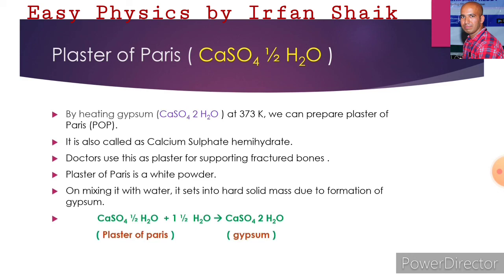When plaster of Paris — CaSO4·½H2O — is mixed with one and a half water molecules, we can find gypsum, that is CaSO4·2H2O.